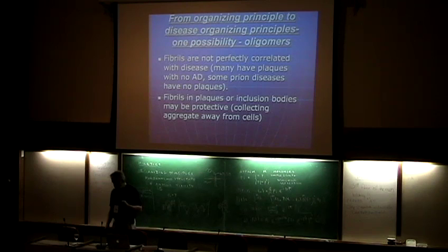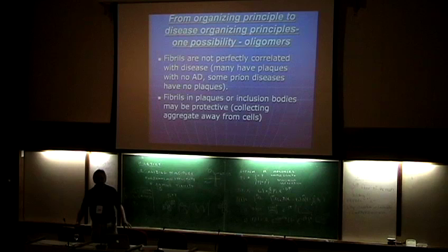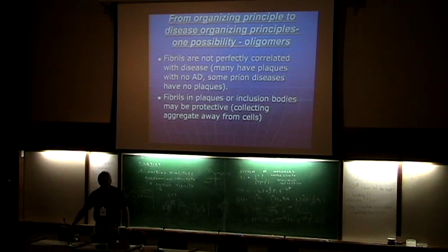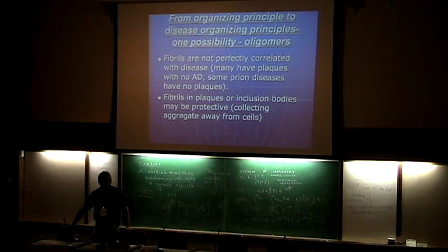It's pretty clear that, for example in the case of the prions, there are these little oligomers - I showed you these two-dimensional crystals of these oligomers. It's pretty clear in all these diseases that these oligomers form. Oligomers are just multimers - dimers, trimers, et cetera - of the relevant protein. And those oligomers are probably what's doing the damage in the disease.